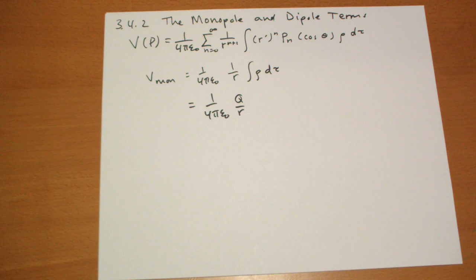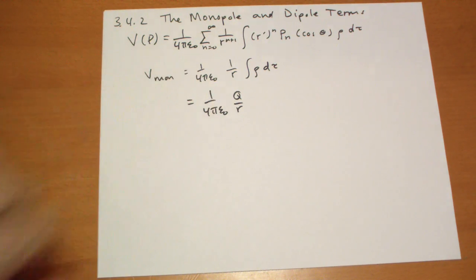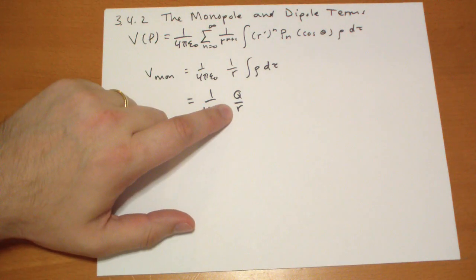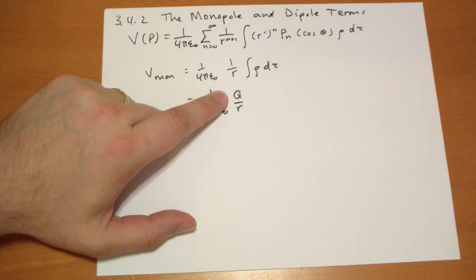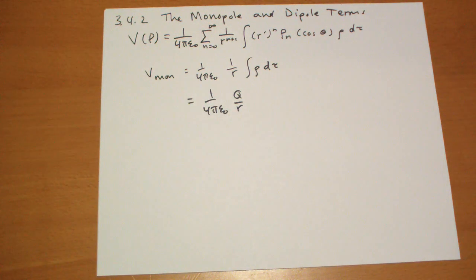Looking at this equation, note that we only depend upon the total charge. We don't care where those charges are placed or how they're arranged. Also, the potential varies only on how far we are, not from the charges or the center of mass of the charges, but from the origin, whatever origin we choose.